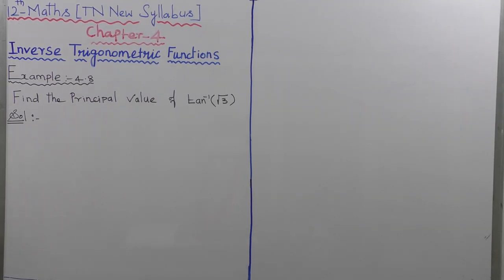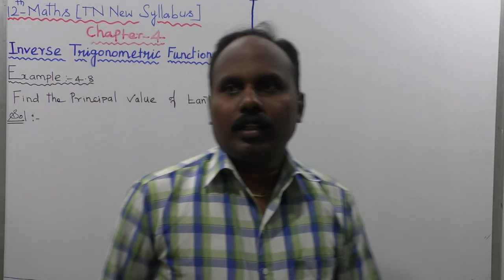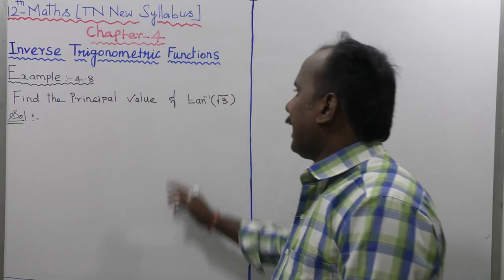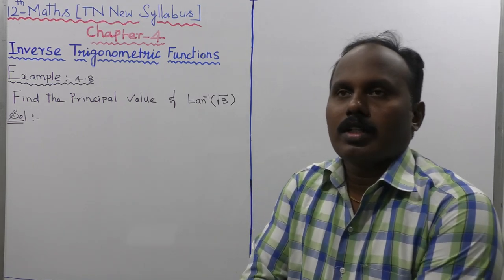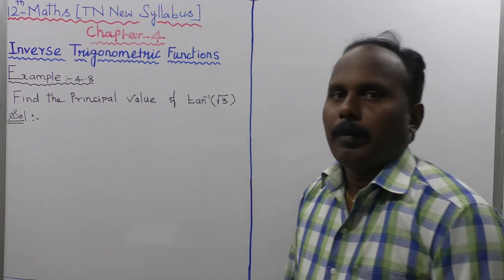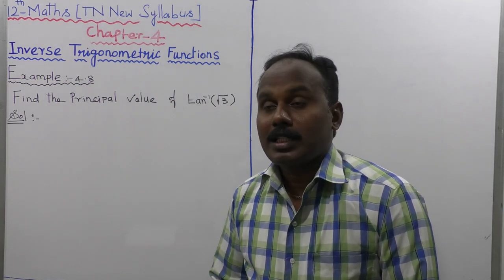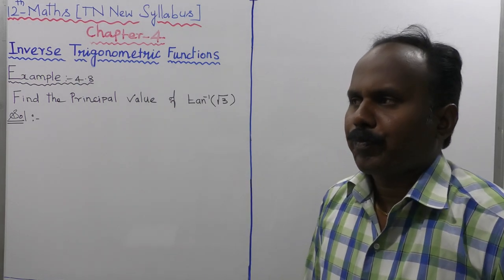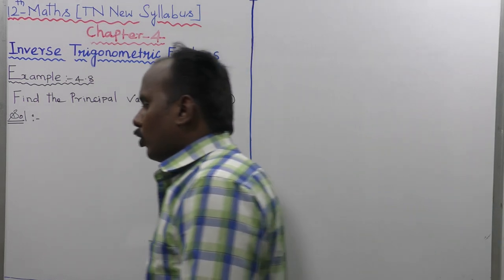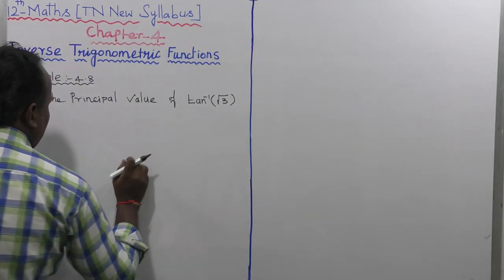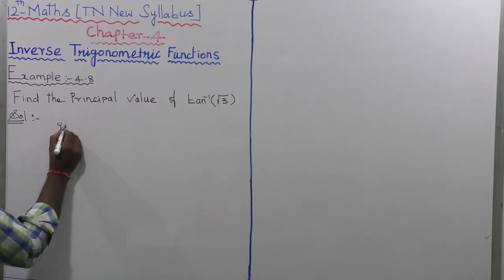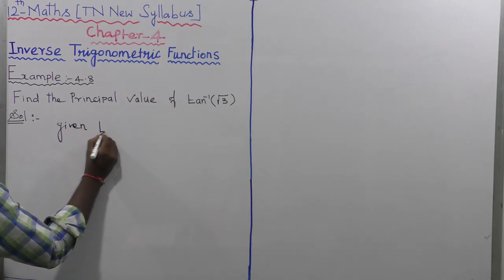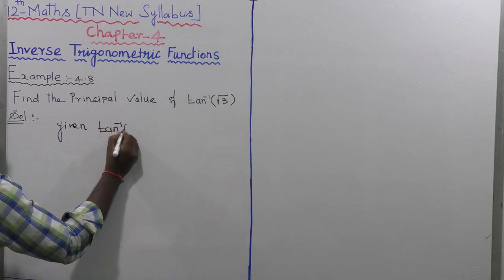Example 4.8: Find the principal value of tan inverse of root 3. The range of tan inverse of x is the open interval minus pi by 2 to plus pi by 2, or the closed interval minus pi by 2 to plus pi by 2. Given: tan inverse of root 3.